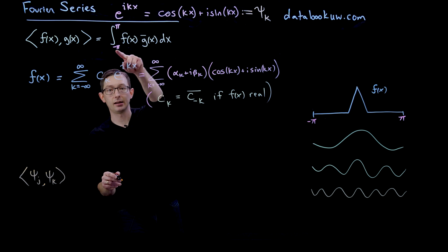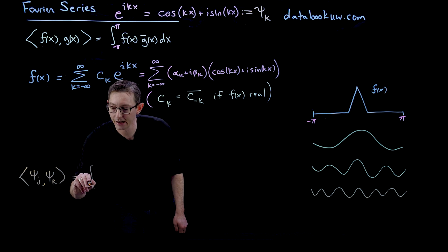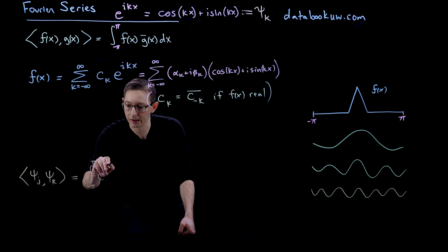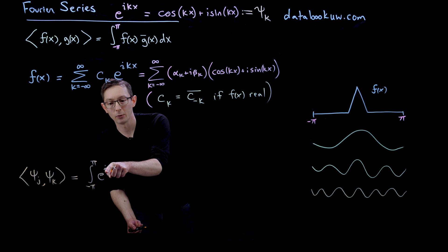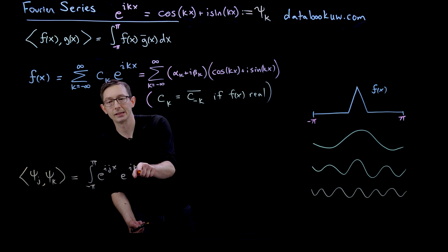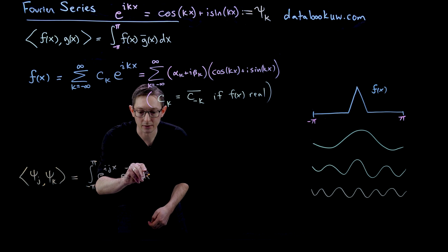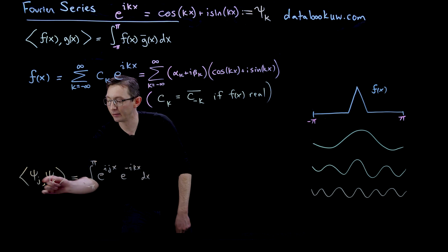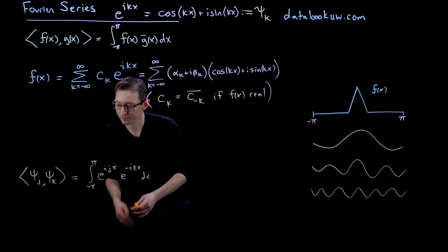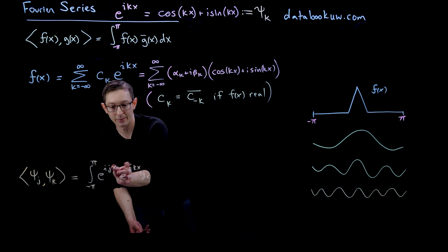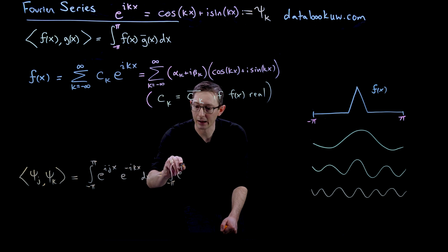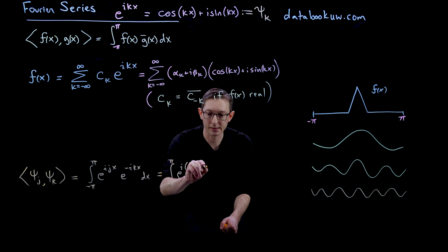Writing this out using the inner product in Hilbert space: this is the integral from negative pi to pi of ψ_j times the complex conjugate of ψ_k. ψ_j is e to the i j x, and the complex conjugate of e to the i k x is e to the minus i k x. So we have the integral from minus pi to pi of e to the i j x times e to the minus i k x dx. Putting those exponents together, that equals the integral from minus pi to pi of e to the i (j minus k) x dx.